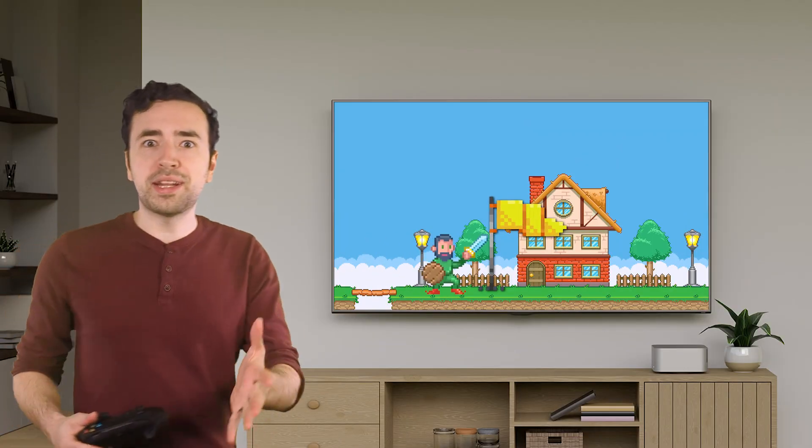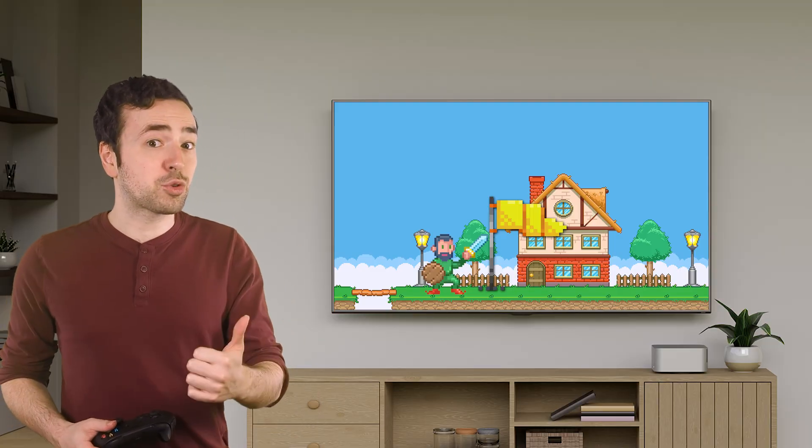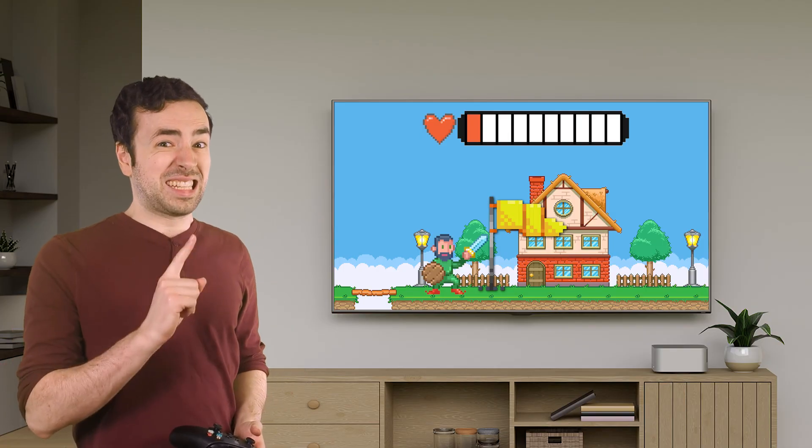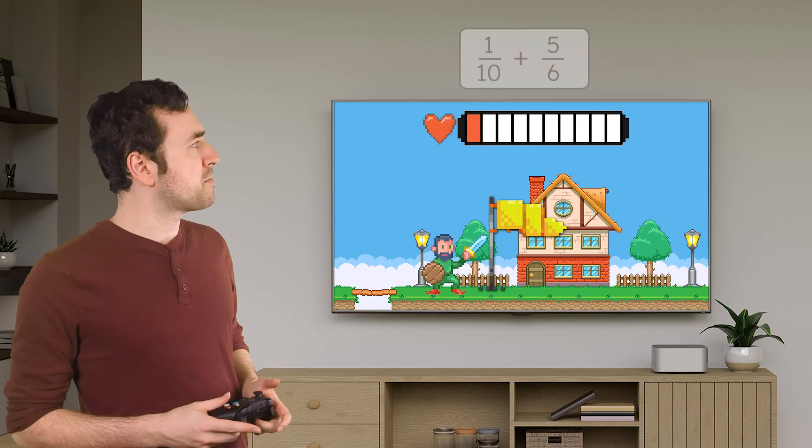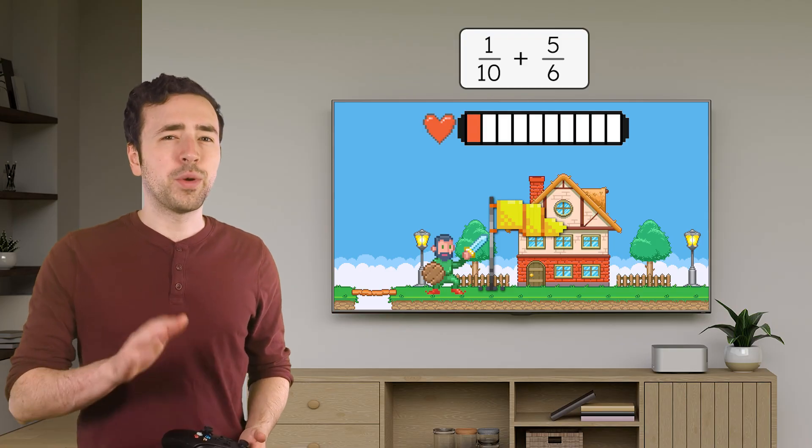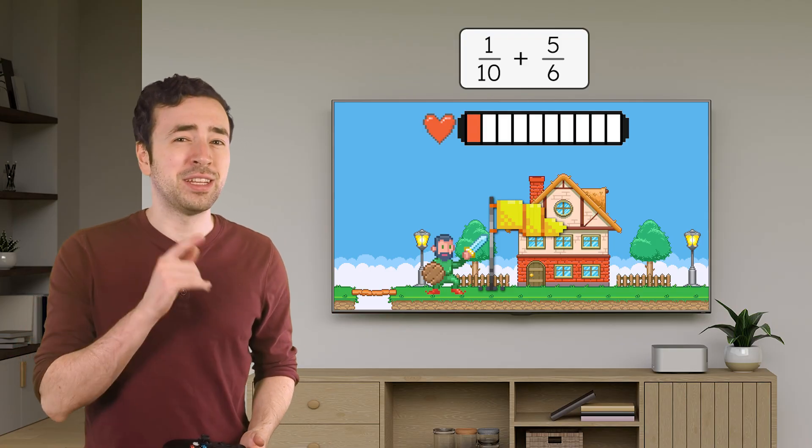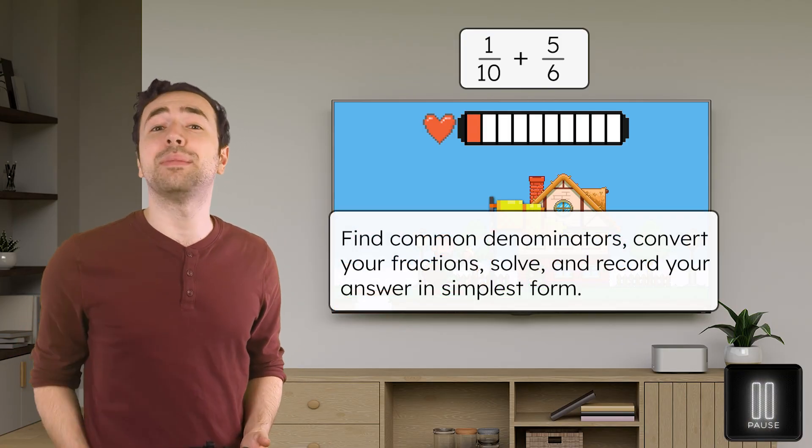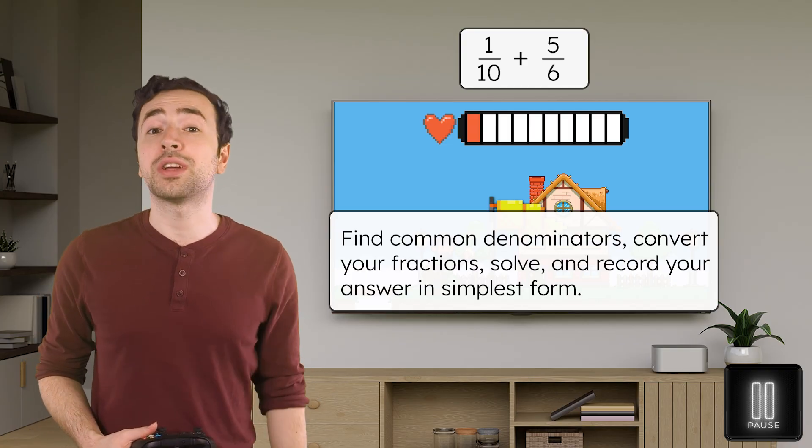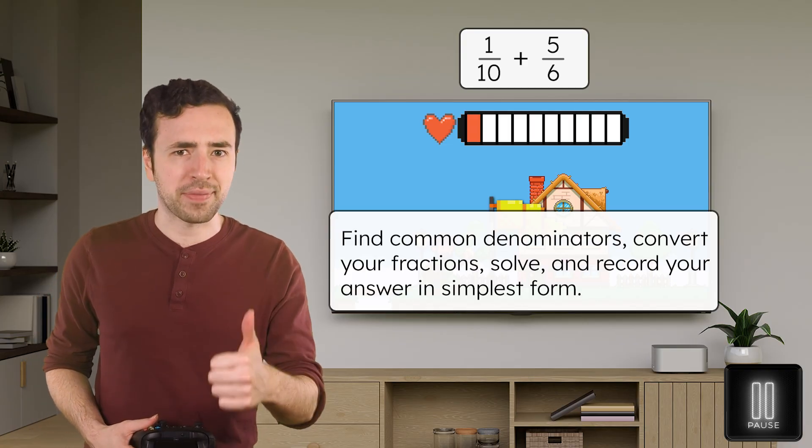We've made it to another checkpoint! Remember, these restore a lot of health. My health is very low, just one-tenth. This checkpoint will give me five-sixths more. Sweet! We need to figure out how much health I'll have in total. Pause here to find common denominators, convert your fractions, solve, and record your answer in simplest form. You got this.